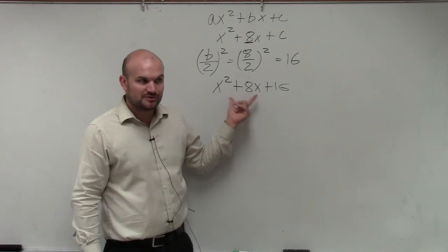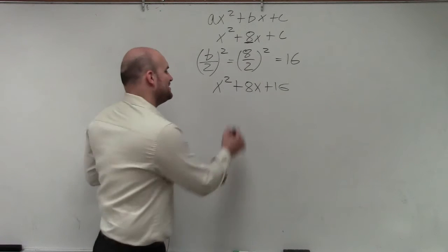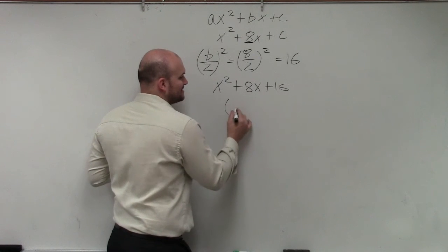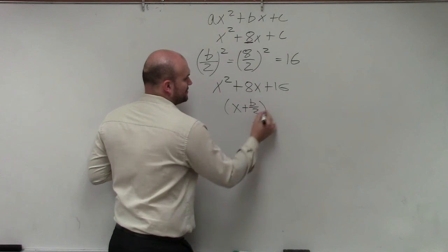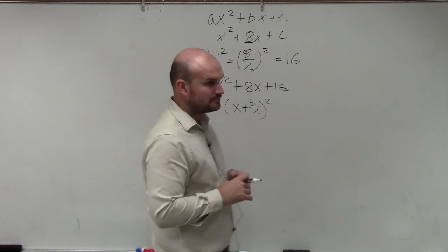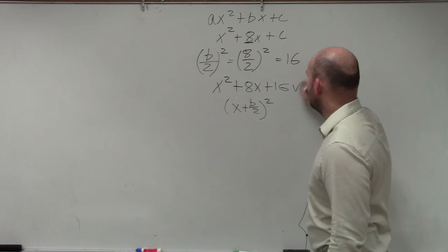We can factor this into a binomial squared, which again we'll talk about later. But the trick to do that is just to do x plus b divided by 2 squared. So I want you to show me this.